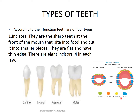In the permanent teeth there are eight incisors, four canines, eight premolars, and twelve molars.